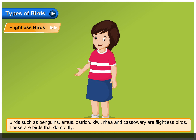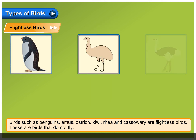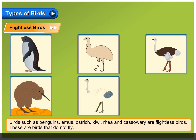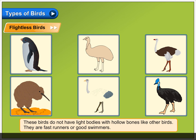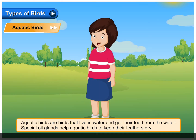Flightless birds. Birds such as penguins, emus, ostrich, kiwi, rhea and cassowary are flightless birds. These are birds that do not fly. These birds do not have light bodies with hollow bones like other birds. They are fast runners or good swimmers.